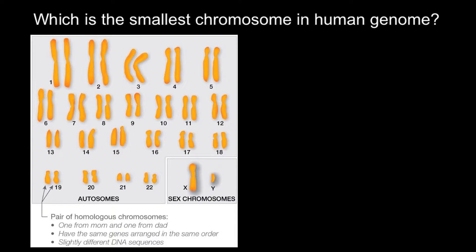As you can see here, we have the human karyotype. We have 23 pairs of chromosomes — 22 pairs that we call autosomes and two chromosomes that we call sex chromosomes. So the total number of different chromosomes is 24, not 23 as you might think, because for number 23 we actually have two different chromosomes.